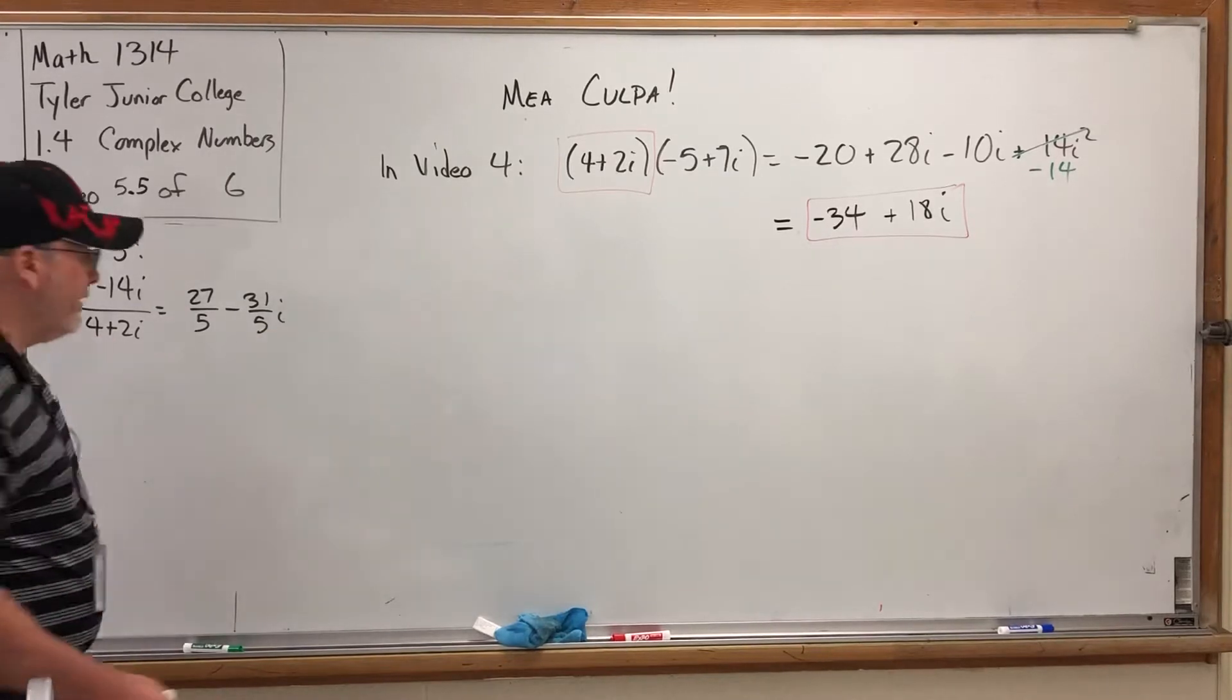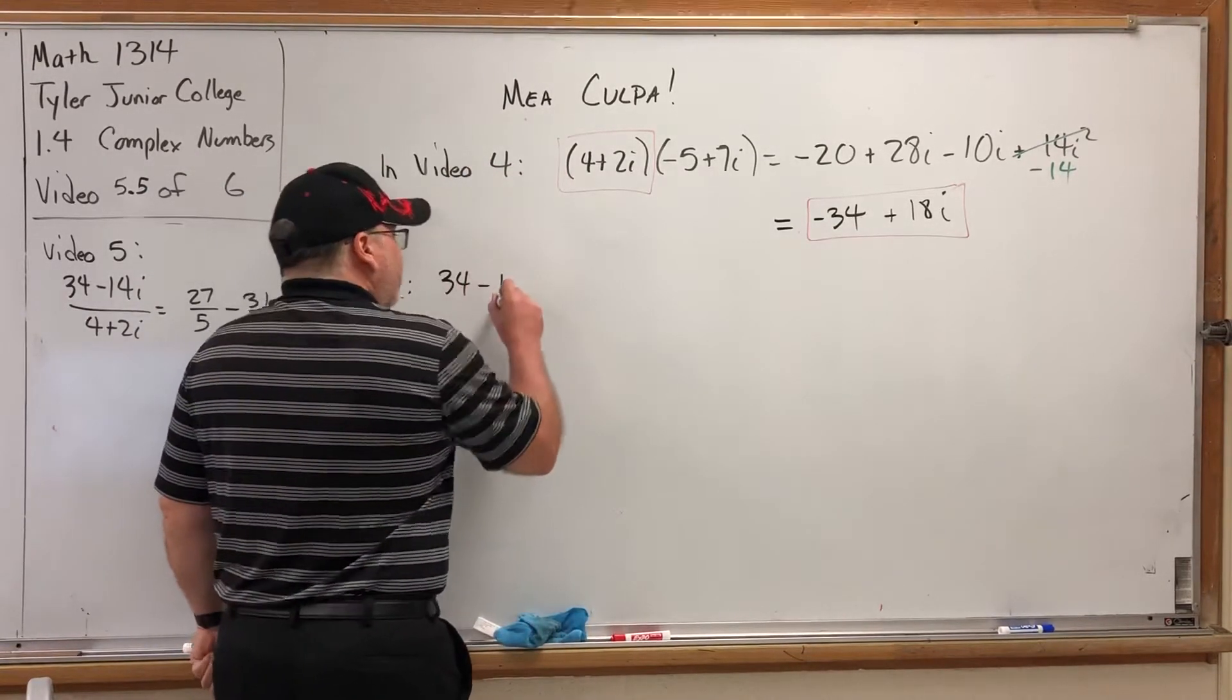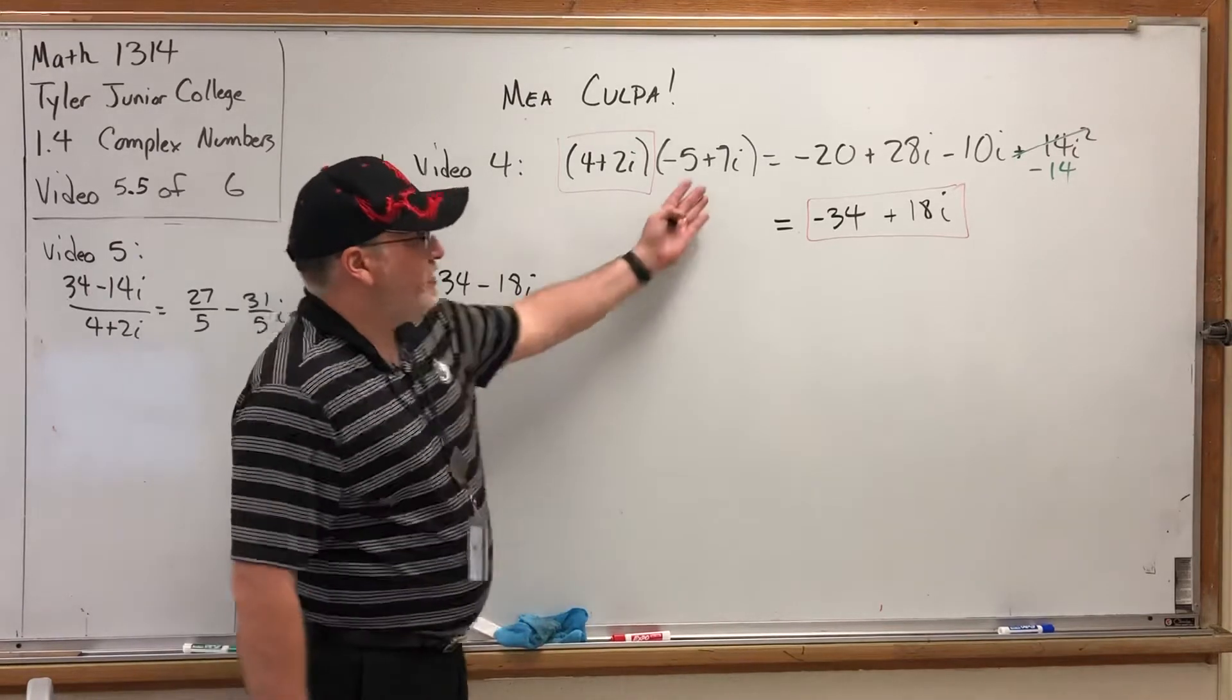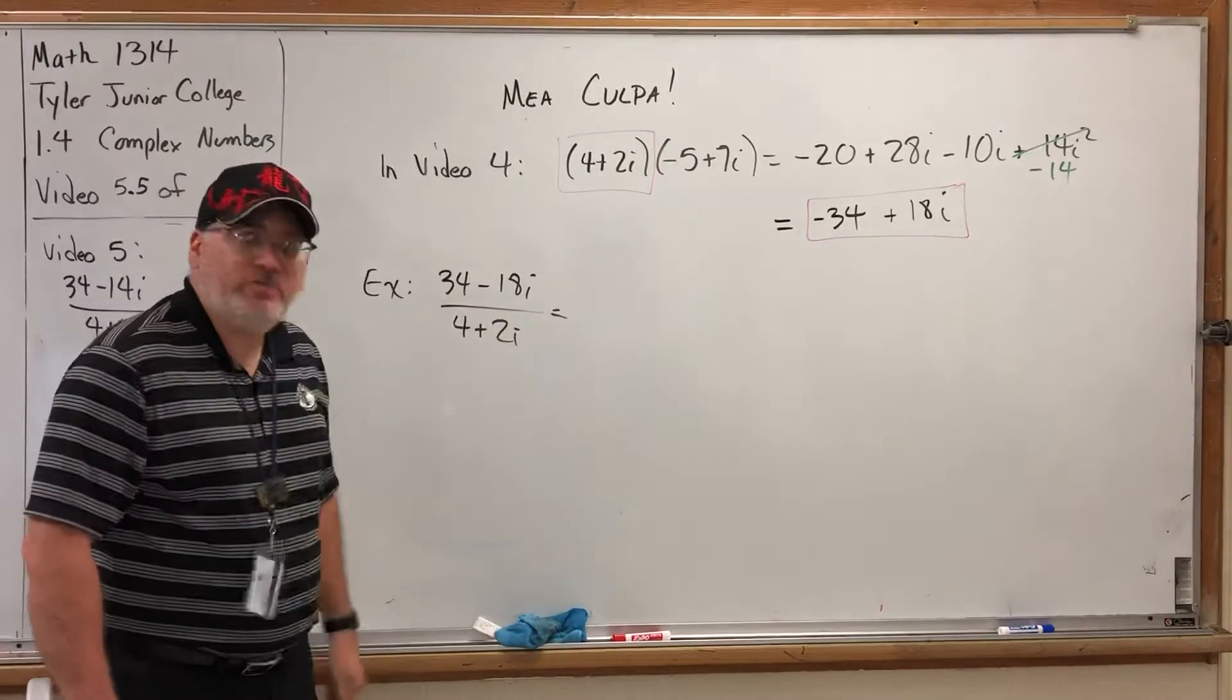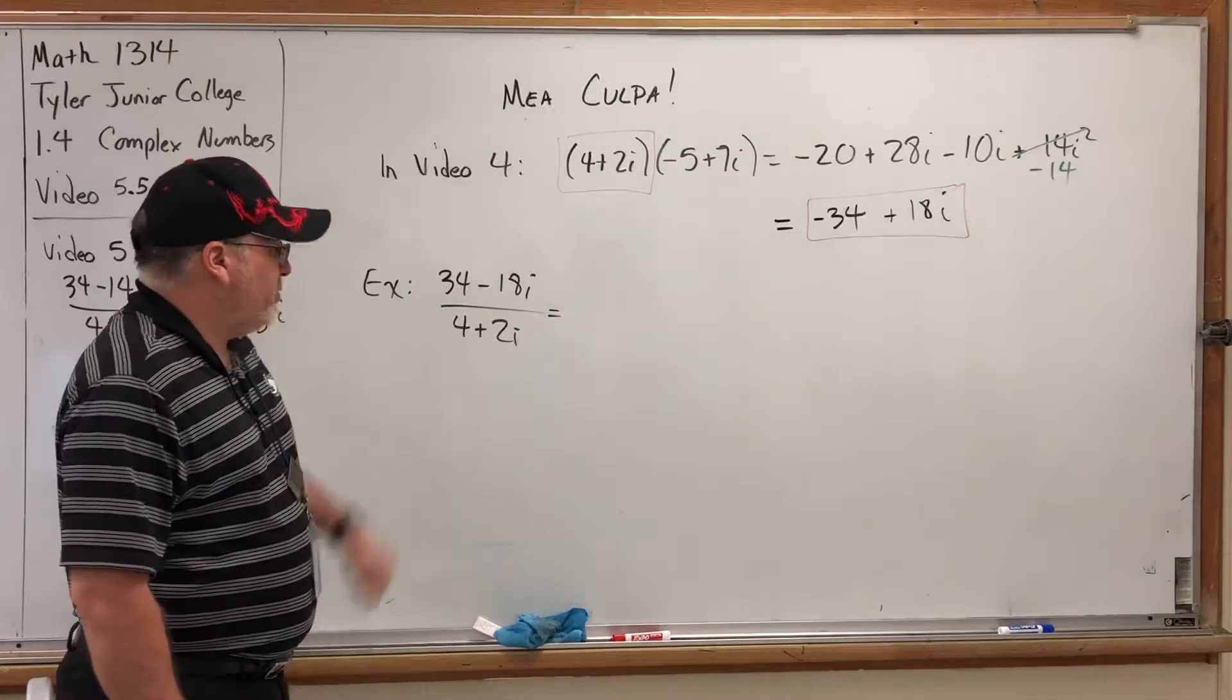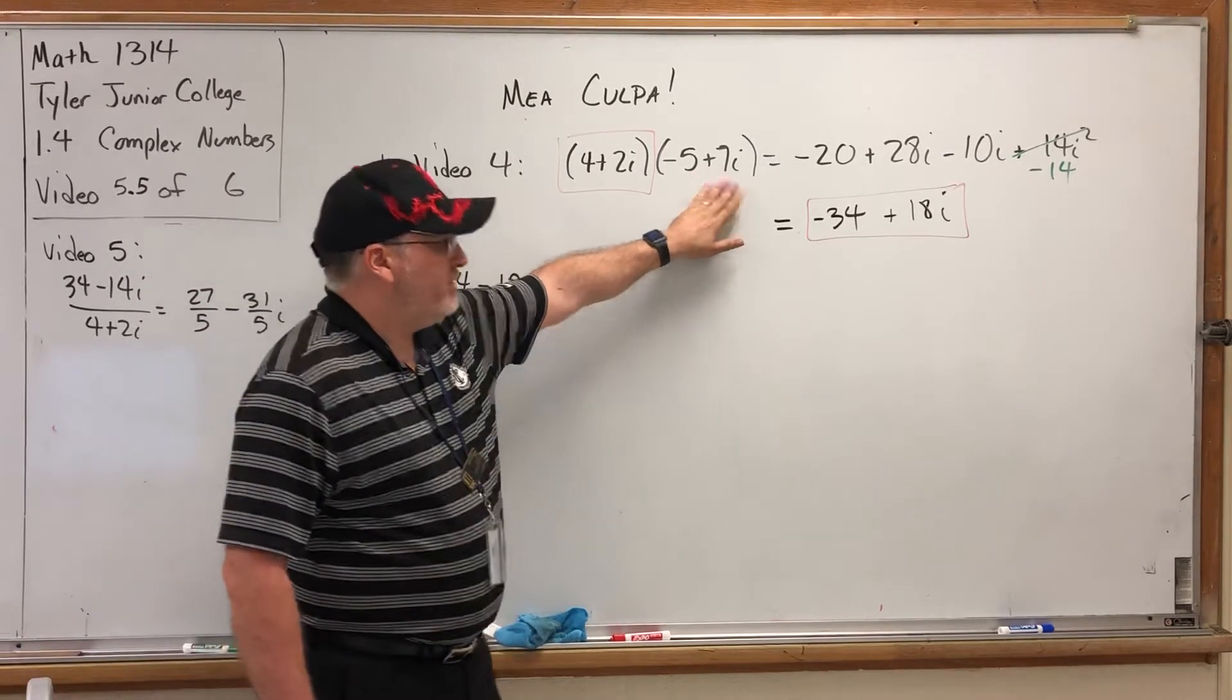So what should have happened in video 5? Well, had I done this problem in video 4 correctly, the example I would have set up in video 5 is not this, but its opposite: -34 - 18i divided by this factor, which should have given us the opposite of this factor. So number one, I'm going to go through this division problem a little more quickly than in the previous video. Number two, I'm going to make a prediction that this is going to give us 5 - 7i.